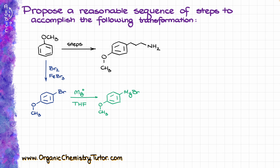And once we have our Grignard reagent, we can do the reaction with an epoxide, which after the acidic aqueous workup is going to give us the primary alcohol.